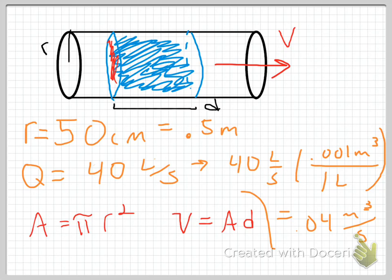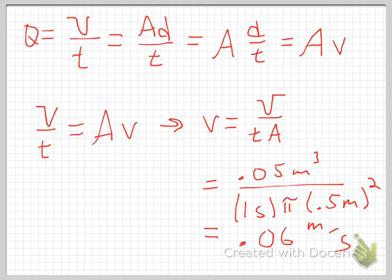At that point, I proceed exactly the same way. I've taken my liters per second, converted to cubic meters per second by looking up the conversion, and then follow the exact same process — the only difference is I plug in 0.04 instead of 0.05. I hope this made some sense.